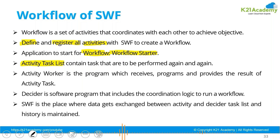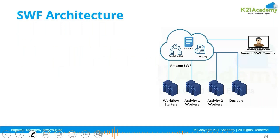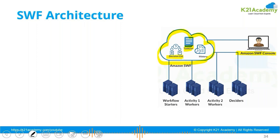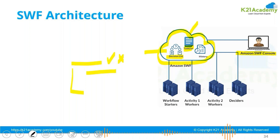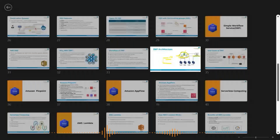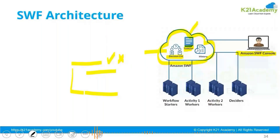There will be multiple components. On the cloud you have the SWF management console, where you have a task list — what has to be done — and a decision list — when it has to be done. In the decision task list you define a workflow: if task 1 is successful, execute task 2; if task 1 is not successful, execute task 3.